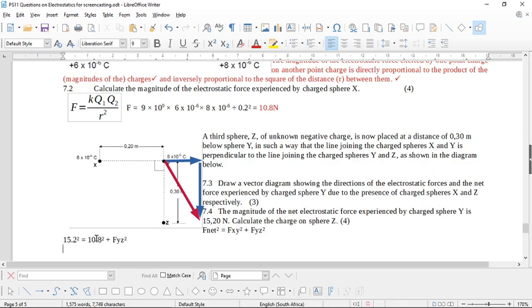So then you put these into your calculator making sure that you square the 15.2 and you square the 10.8 and you end up with the force y, z squared. Let me do it in my calculator, 15.2 squared subtract 10.8 squared equals 114.4 square root your answer and you get 10.696 newtons. So that's the force.